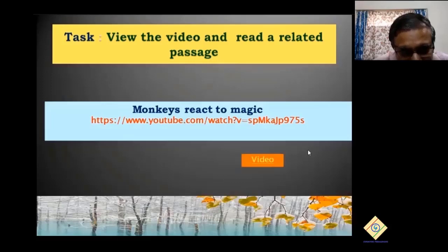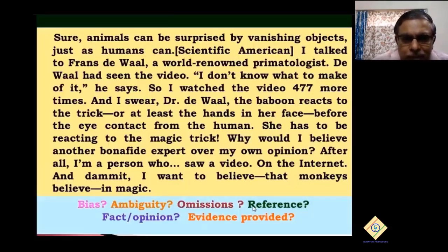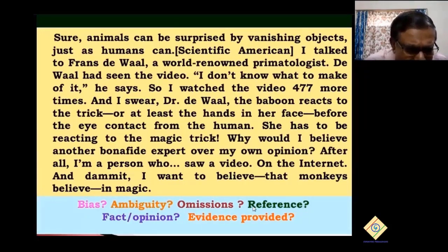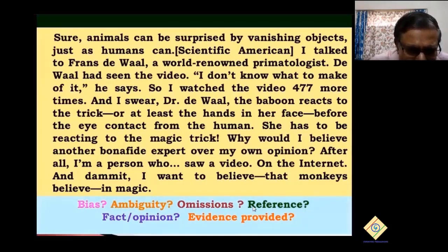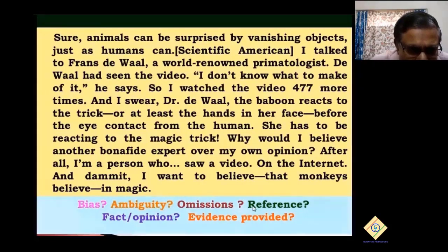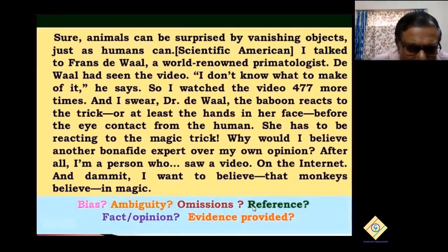Here's a write-up based on the video. We are going to check whether there is any bias in it, any ambiguity, whether he has left anything out or made any omission, whether there's any reference to another text, whether sentences are mere facts or opinions, and whether evidence is provided. That is what you look for — bias, ambiguity — when you're reading a scientific article.